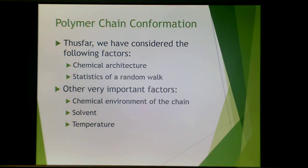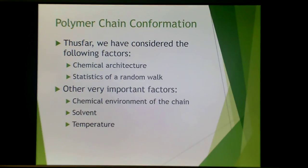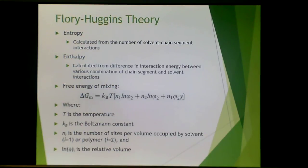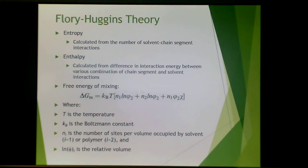In talking about polymer chain conformation, we have considered the chemical architecture and the statistics of a random walk. Other very important factors include the chemical environment of the chain — the solvent and the temperature. The chemical environment focuses on interaction energies between molecules, specifically the free energy of interaction between a solvent molecule and a chain segment, compared to interactions between two chain segments or two solvent molecules. This is where Flory-Huggins theory comes in. It takes into account the entropy, calculated from the number of solvent-chain segment interactions, and the enthalpy, calculated from differences in interaction energy between chain segments and solvent, giving us the free energy of mixing.